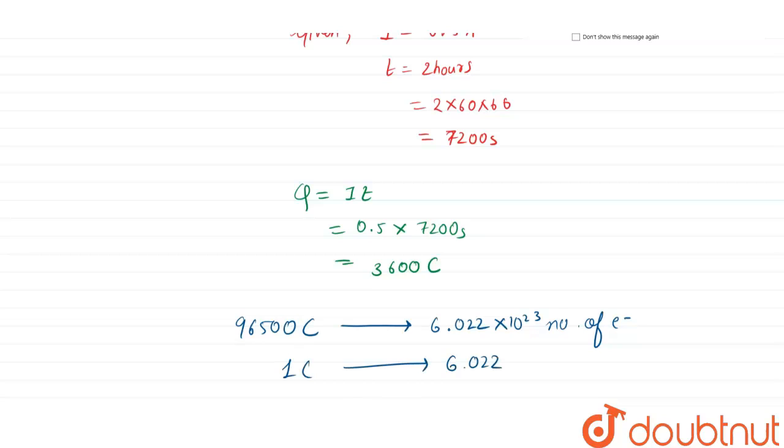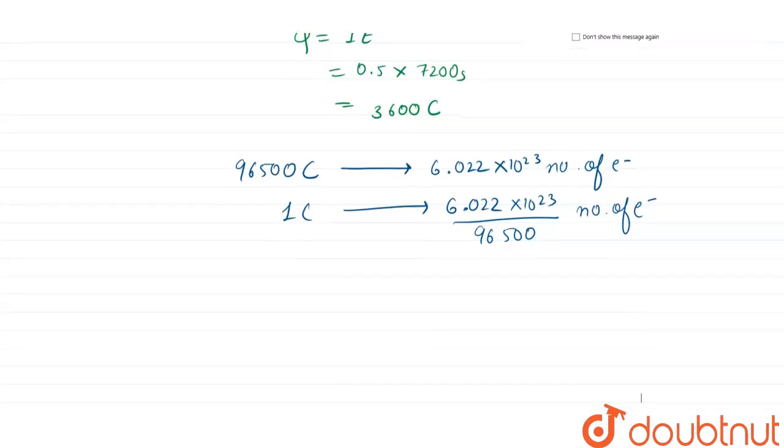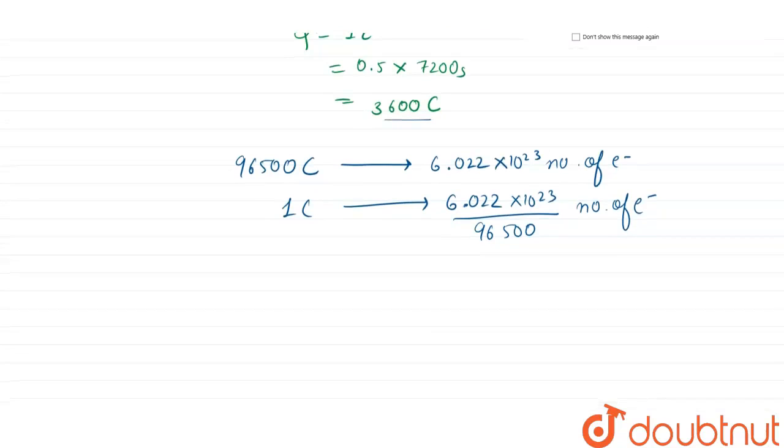So one coulomb will have 6.022 times 10 to the power 23 divided by 96500 number of electrons. We have a charge of 3600.